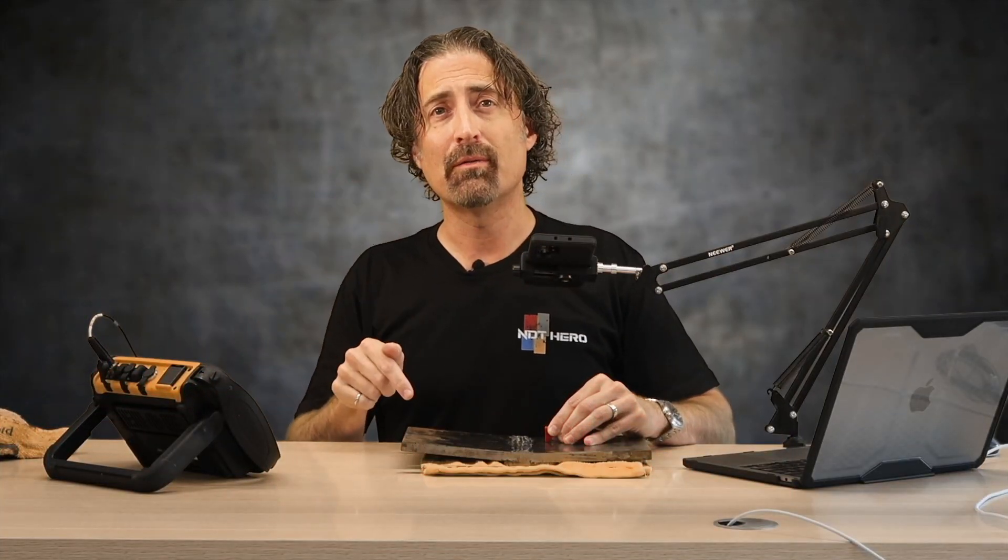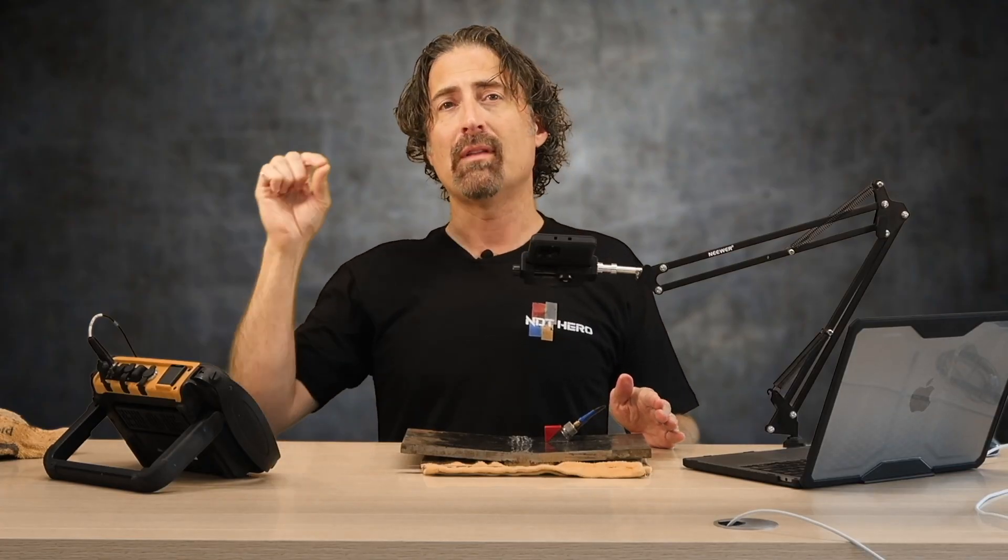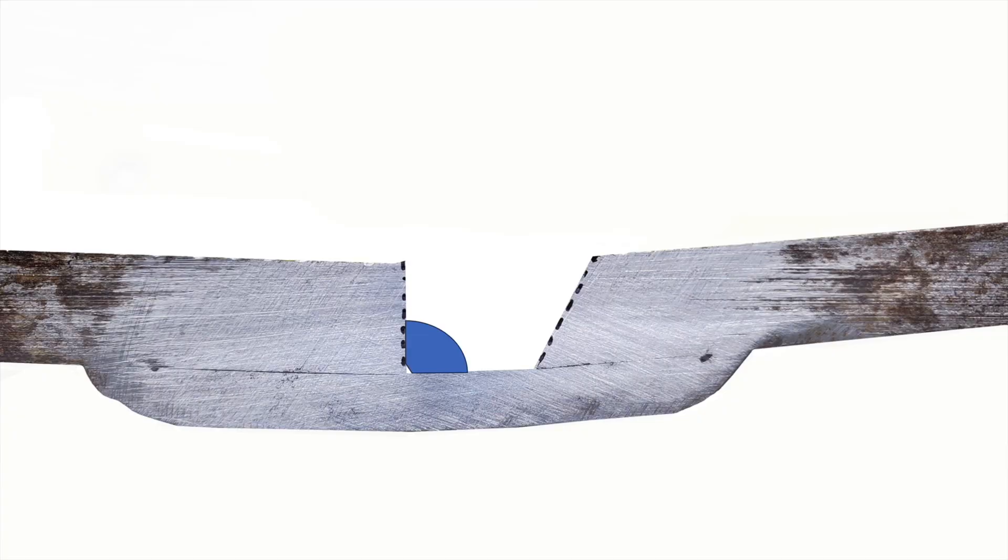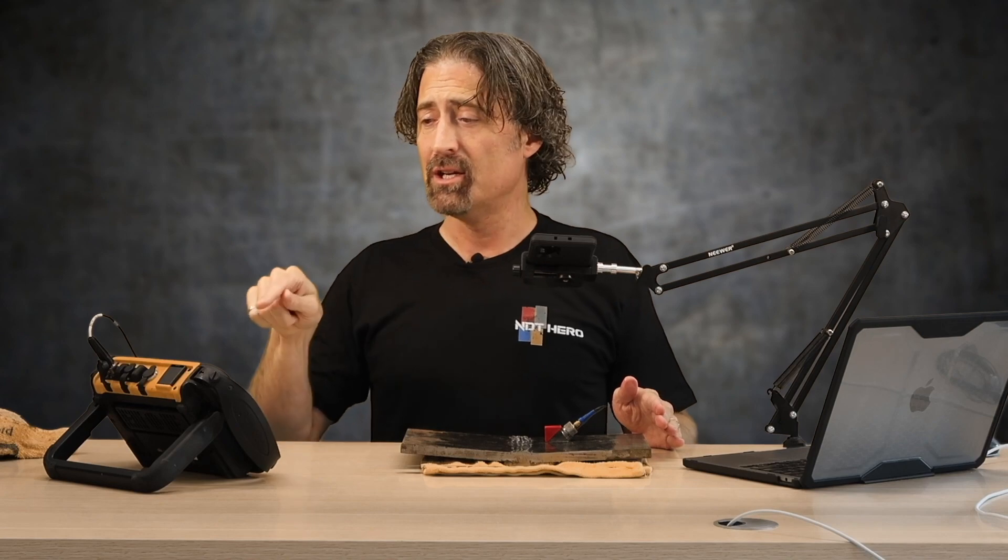And those are hard to do for the welder because you've got an unbeveled edge and it's the first pass they have to lay in that 90 degree corner. And if they don't get right into the bottom, then you get a little tiny bit of root lack of fusion or lack of penetration shows up just like that.